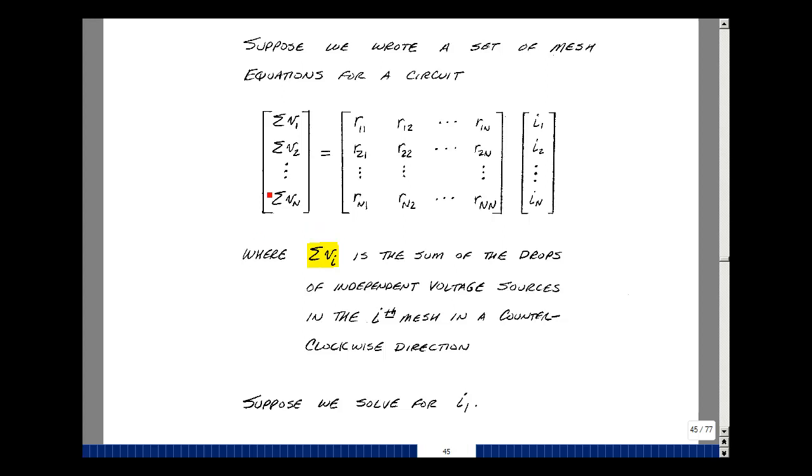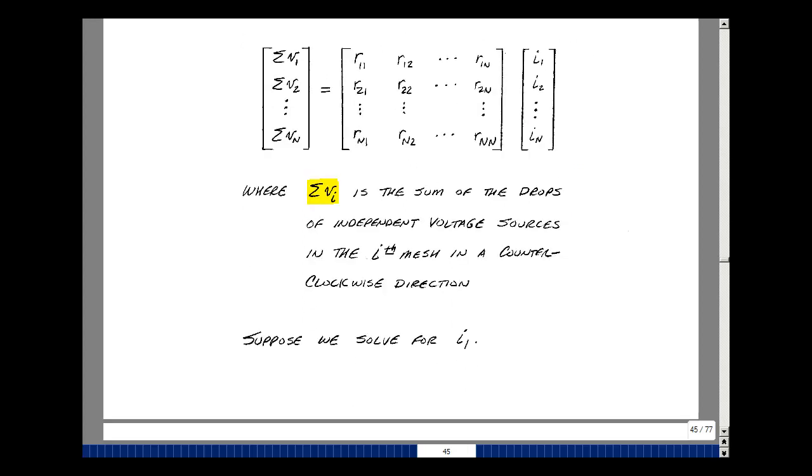The left-hand side of the equation would be the sum of the drops of the independent sources in a counterclockwise direction. And then lastly, we'd have a vector here of our unknown n mesh currents. Suppose that we solve for I1. Since we can pick anything and call it I1, it could then be any variable that we're interested in.